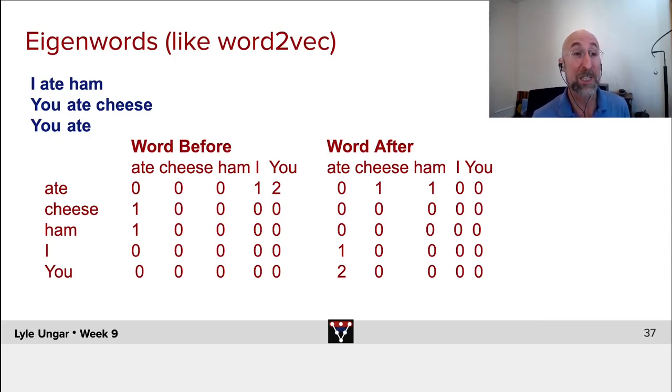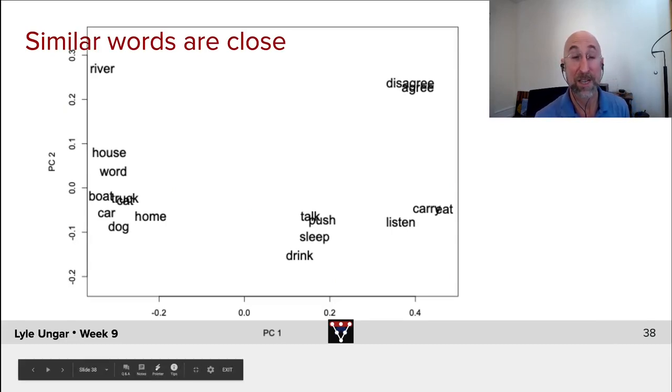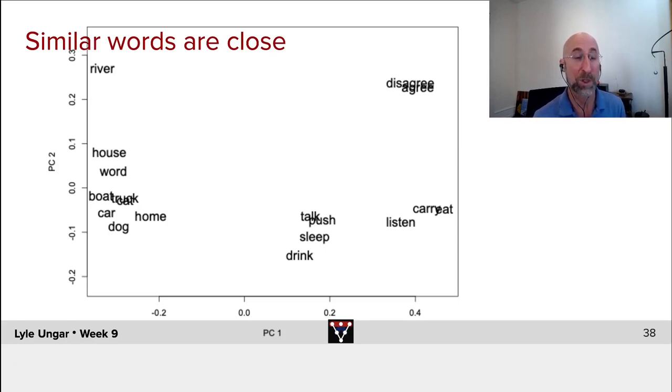If we then take any small set of words, and you'll do this in the notebook in just a second, and take, say, here's a set of words that I picked, and you can take these words and plot them, taking their first two principal components, any sort of plot that makes close words close.